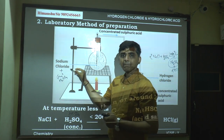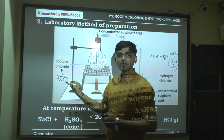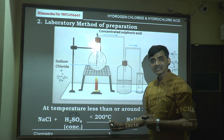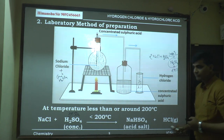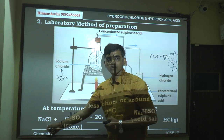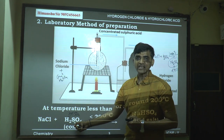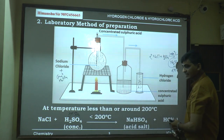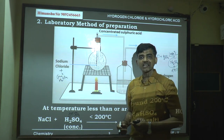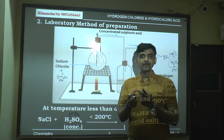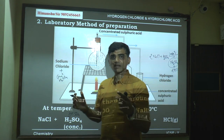To summarize: the reactants are sodium chloride and concentrated sulfuric acid. Temperature is kept below 200°C to obtain sodium hydrogen sulfate and HCl gas. Concentrated sulfuric acid is selected because it is non-volatile with a high boiling point, so it can easily displace HCl gas. Above 200°C, fuel is wasted, the glass apparatus may crack or break, and sodium sulfate — a hard, insoluble, sticky crust — is formed which sticks to the glass and is difficult to remove.